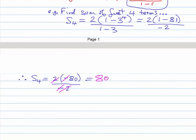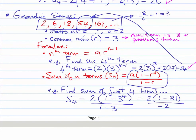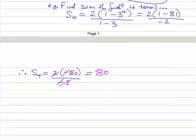The minuses cancel and the twos cancel, giving us 80. The sum of the first four terms is 80. Checking: two plus six is eight, eight plus 18 is 26, 26 plus 54 is indeed 80. We're happy with that. See you in the next video.